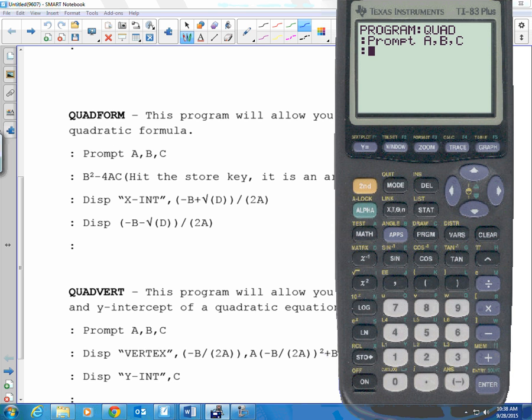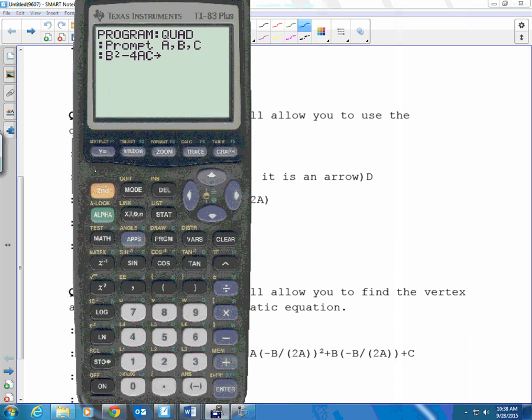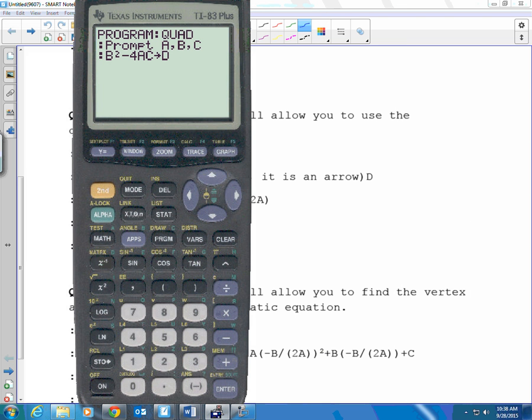Next line, we type in B squared minus 4AC. Alpha B squared minus 4 alpha A, alpha C. And we store. You hit, there's an arrow key. It even says an arrow key. It's right next to the number 1. Alpha D. So that actually stores a discriminant value. Just makes it so we don't have to type as much.